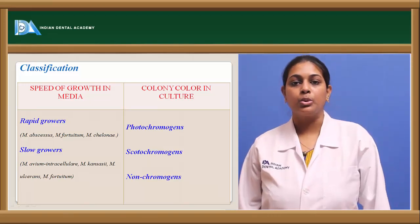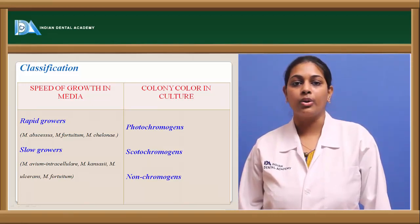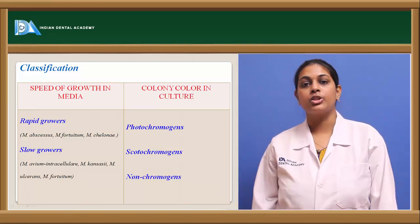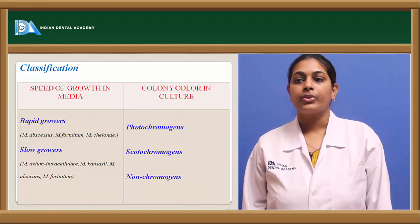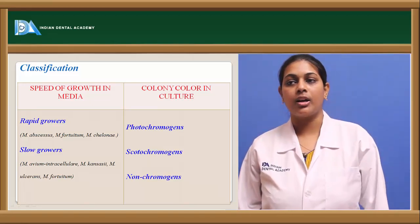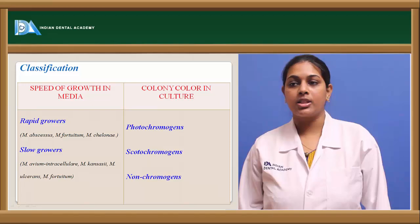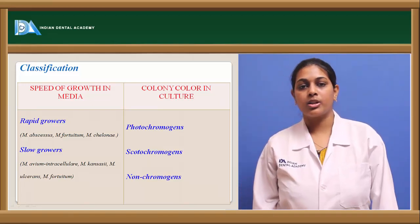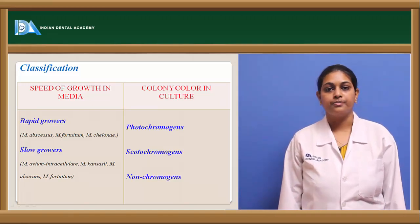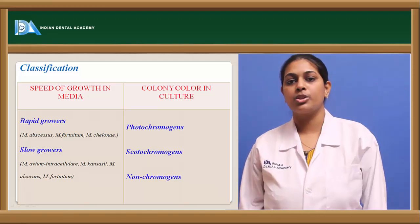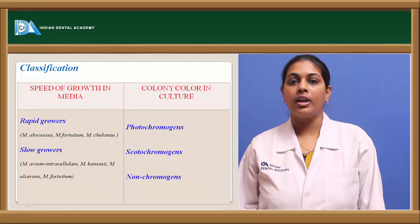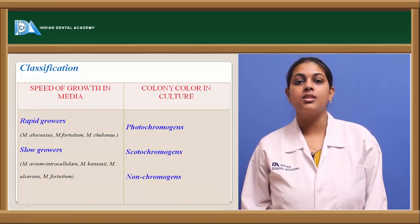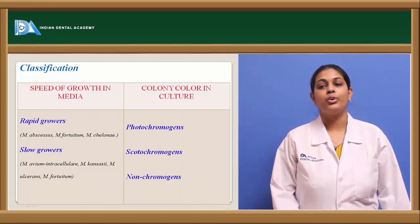Slow growers usually take more than a week — up to two to three weeks or beyond — for their growth when cultured. Examples of slow-growing atypical mycobacterium species are Mycobacterium avium intracellulare, Mycobacterium kansasii, Mycobacterium ulcerans, and Mycobacterium fortuitum.